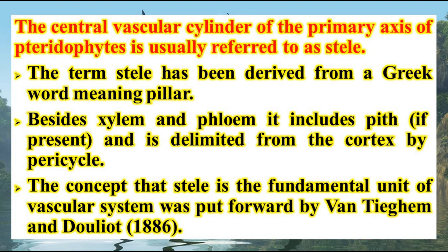The central vascular cylinder of the primary axis or stem of pteridophytes, and also all other vascular plants like dicots, monocots, and gymnosperms, is called stele. The word stele is derived from a Greek word meaning pillar. Besides xylem and phloem, stele also includes pith, and it is covered by the endodermis, the innermost layer of the cortex.